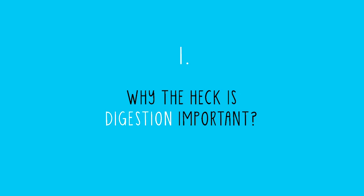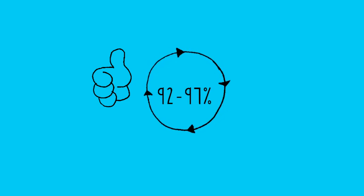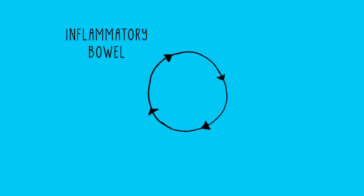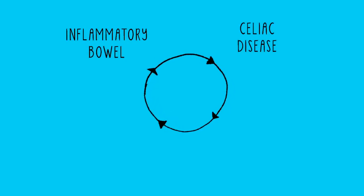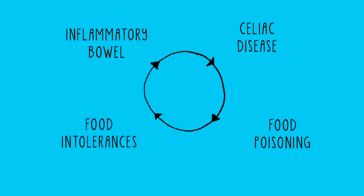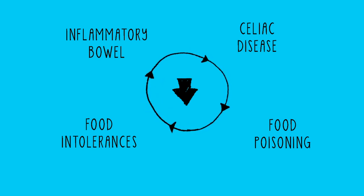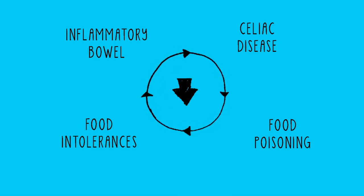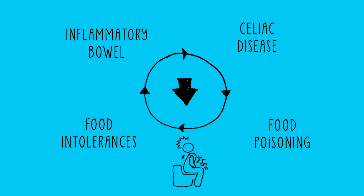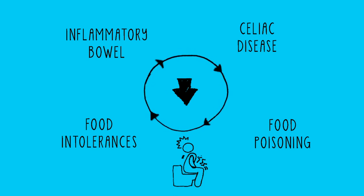Why is digestion even an important subject? Well, if all is working well, then you'll absorb 92 to 97% of your food. But if you or your client are suffering from conditions like inflammatory bowel disease, untreated celiac disease, food poisoning, or untreated food intolerances, then the rate of absorption will be affected, because these conditions often lead to a flattening of the intestinal villi and ultimately diarrhea, which means food moves too quickly to be absorbed. You'll need to consider this when talking about nutrition.